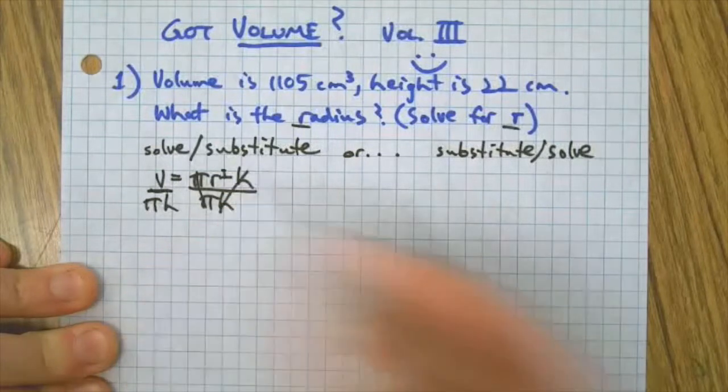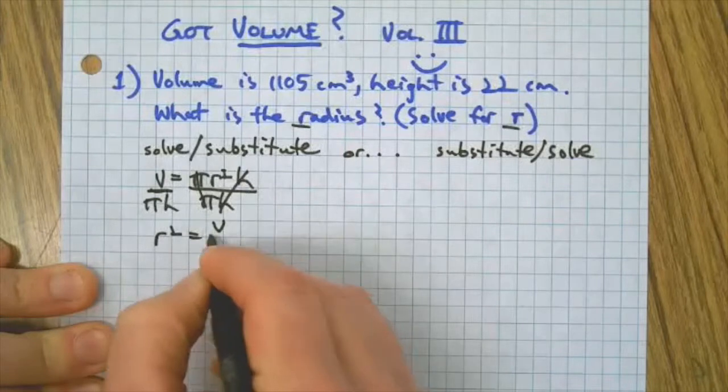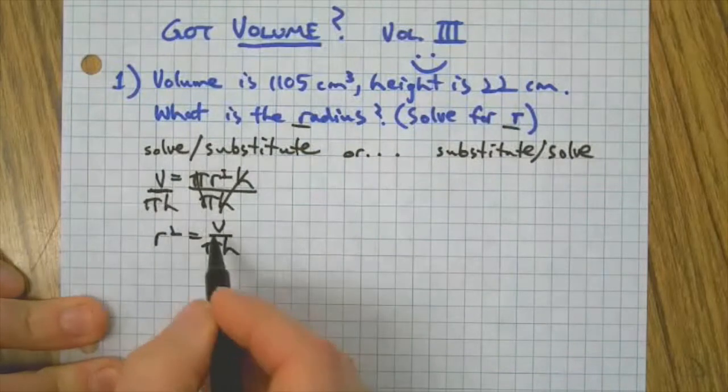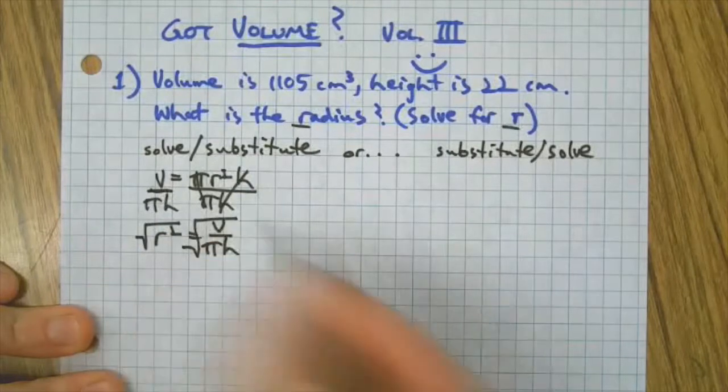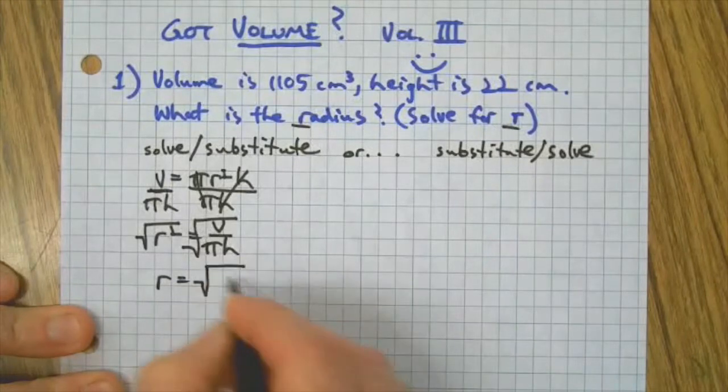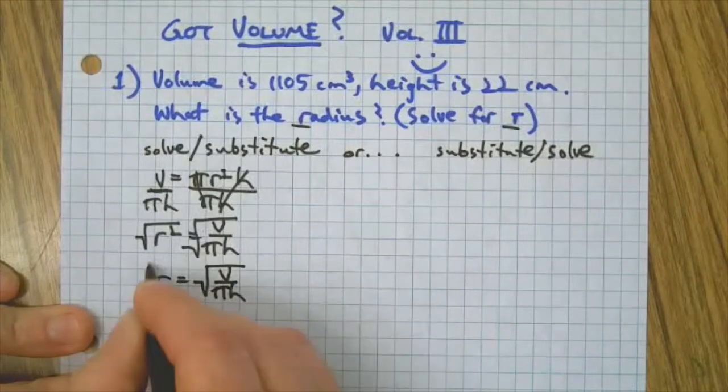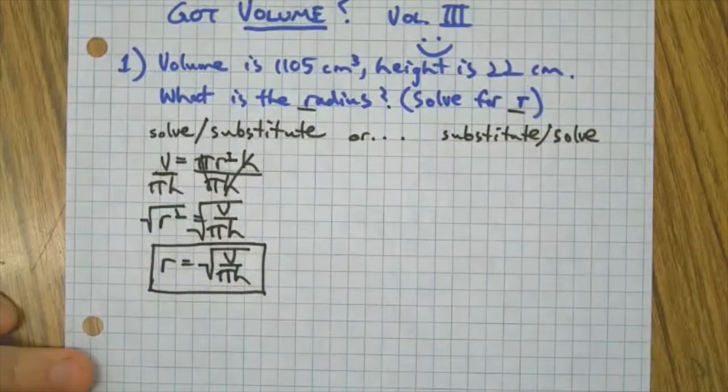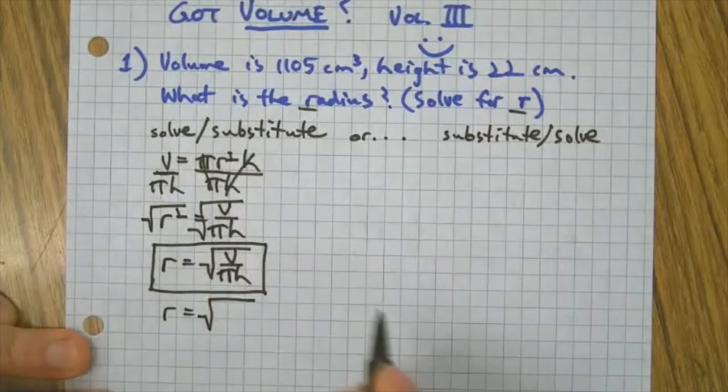Now we have the radius squared equals the volume divided by pi times the height. Important step: take the root of both sides. That isolates the radius and gives us this formula. Now we're going to substitute the numbers that we were given and find the answer.